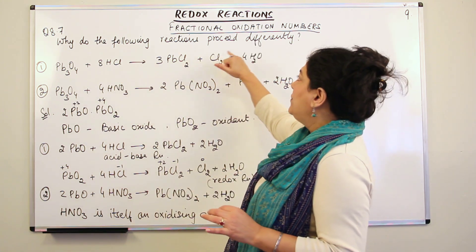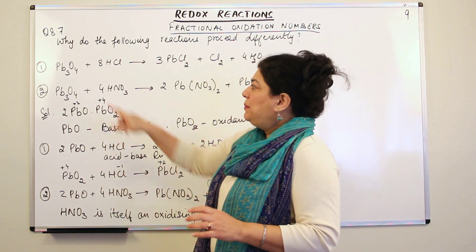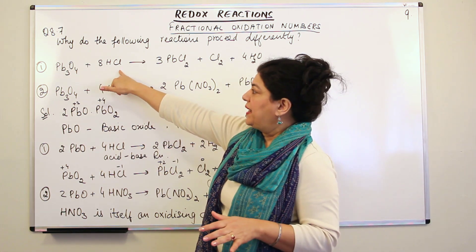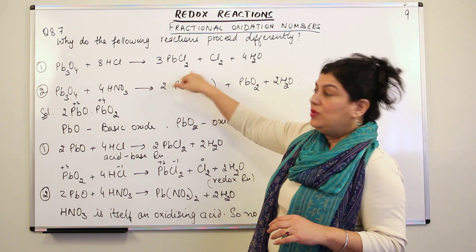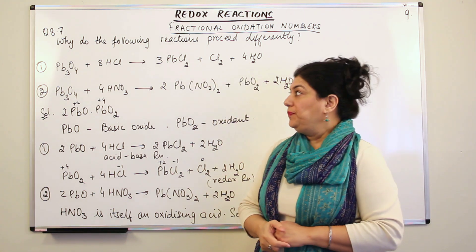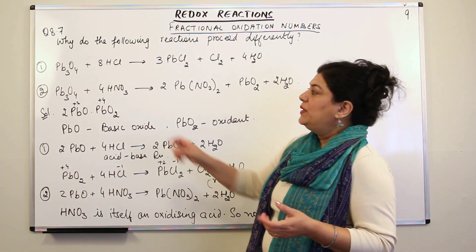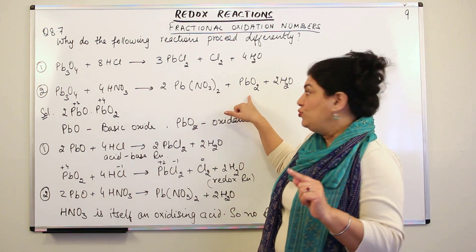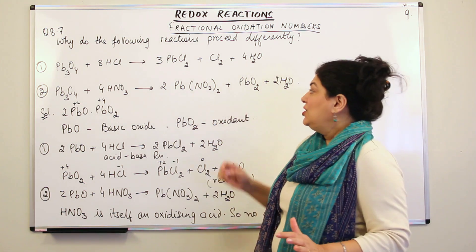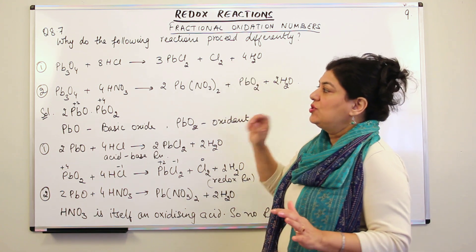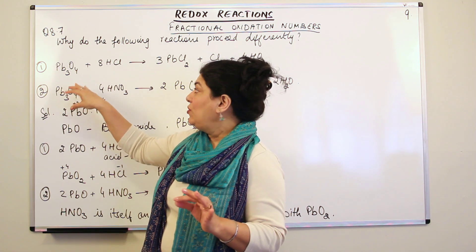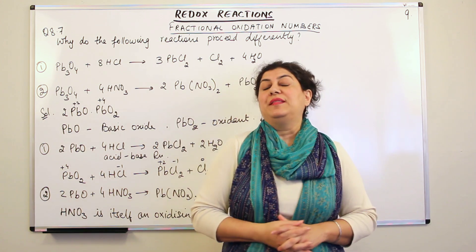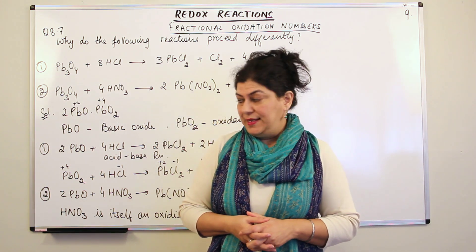The question asks: why do the following reactions proceed differently? Pb3O4 is a mixed oxide. When Pb3O4 reacts with hydrochloric acid, it results in the formation of PbCl2, Cl2, and 4H2O. But when Pb3O4 reacts with HNO3, it results in the formation of Pb(NO3)2, PbO2, and H2O. So we find that although both reactions involve Pb3O4 reacting with acids, we do not see common behaviour, and the question asks the reason for that.